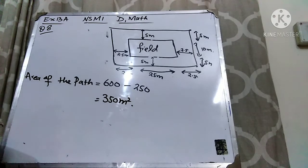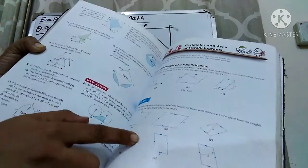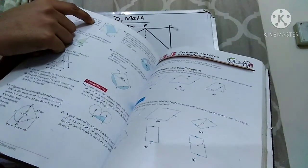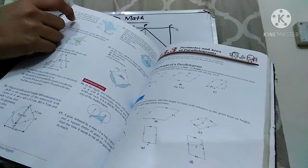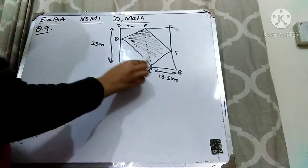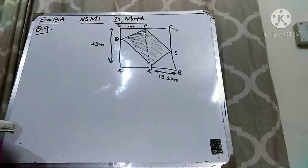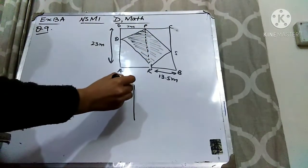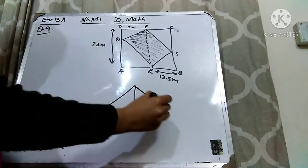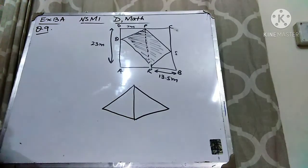I hope that question 8 is clear to you. Now let's come to question number 9. In the figure, AD is equal to 23 meters, DP is equal to 7 meters, and BR is equal to 13.5 meters. P is directly above R. Find the area of the shaded region. This is the shaded region. We can see these dotted lines — there are two triangles. We have to find the area of both triangles and then add them to get the area of the shaded region.